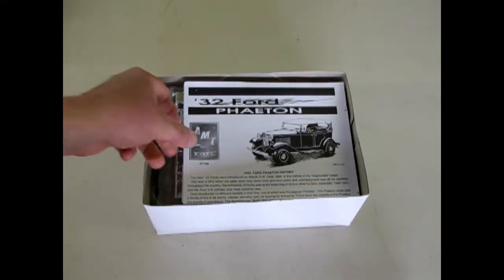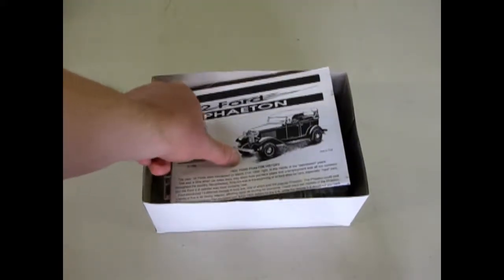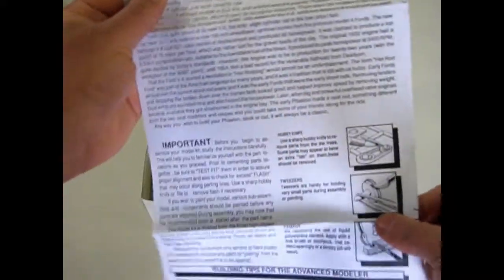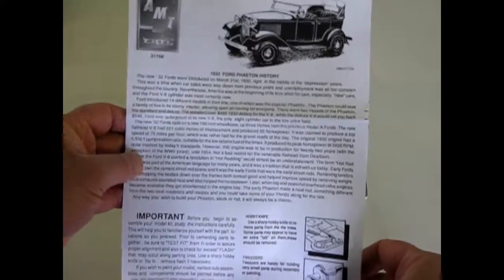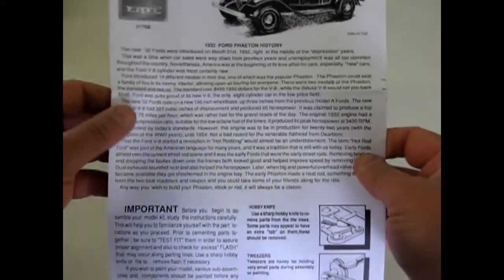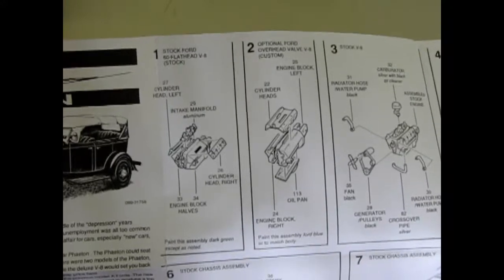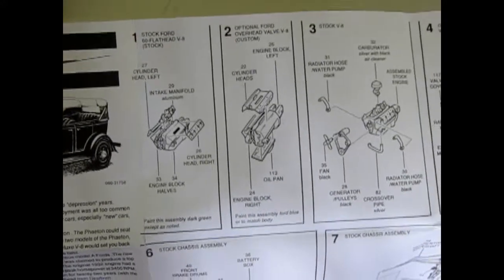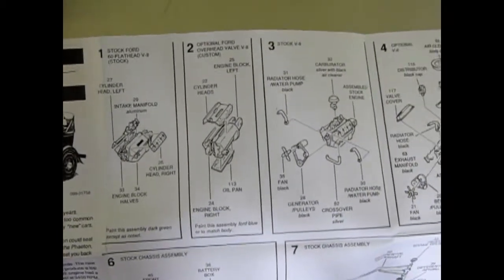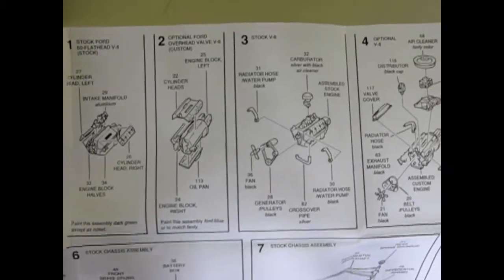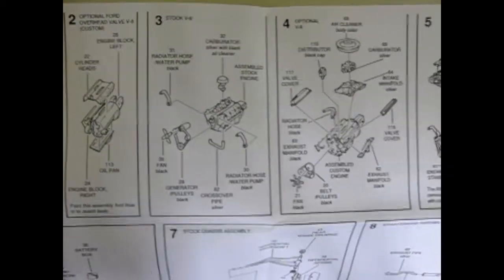So here we have our 32 Ford Phaeton instructions looking as nice as can be. I always like the artwork in these kits. They give you a great big write-up right here so you get to know everything about the 32 Ford, including the hot rod history that came in after World War II because this kit is a three-in-one kit. And as you can see you get the old Ford Flathead. This is the first year of the Ford Flathead, 1932. Revolutionized speed and it was a great car for gangsters because it had something that could outrun the police if you read your history.